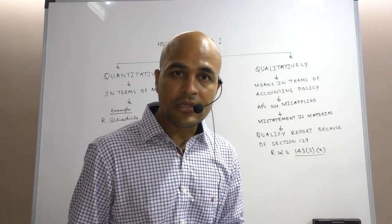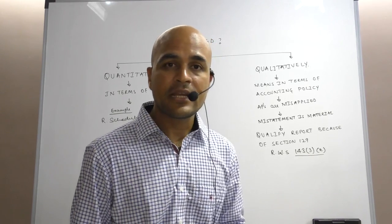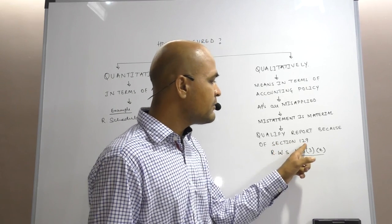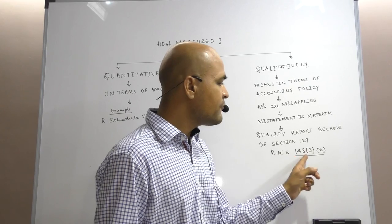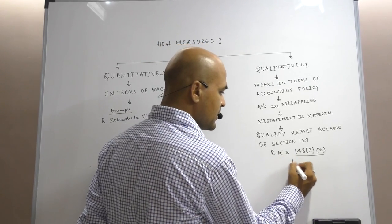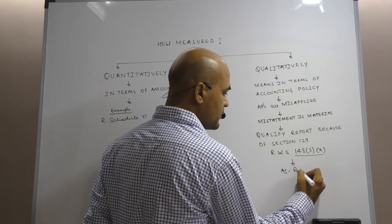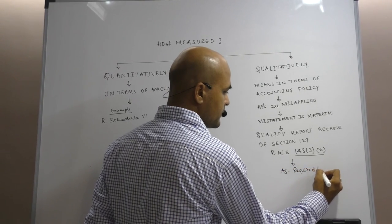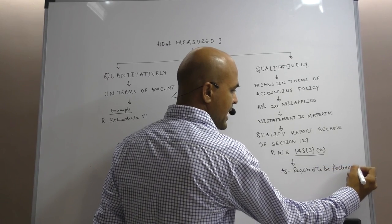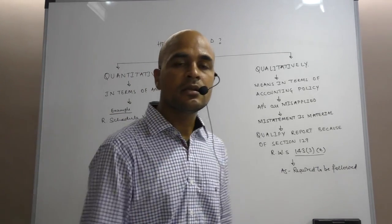If they do not comply with accounting standards, the auditor will have to qualify the financial statements. When we have a look at Section 129 read with Section 143, it becomes very clear that accounting standards are required to be followed. And if they are not followed, the misstatement is material.